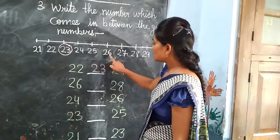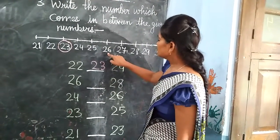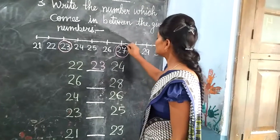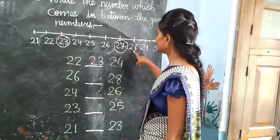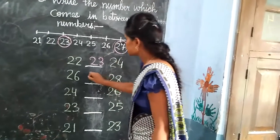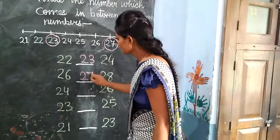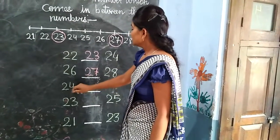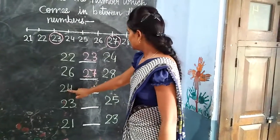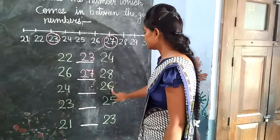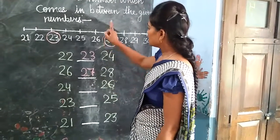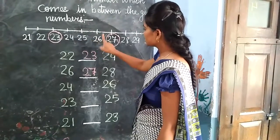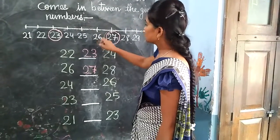Now next number: what comes in between 26 and 28? Yes — it comes 27. We will write here: 27. Now next number: what comes in between 24 and 26? We will find out what comes in between 24 and 26 — it becomes 25. We will write here: 25.